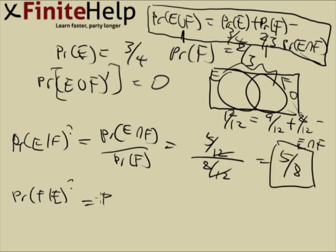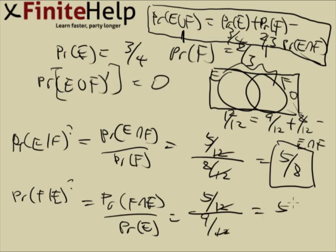With F given E, again, first thing, we change that to F intersect E over E. The intersection is the same. E intersect F is the same thing as F intersect E. So that's 5/12. E is three-fourths, which is 9/12. So the answer is going to be 5/9.